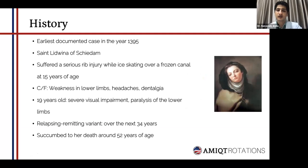Regarding the history, the earliest documented case was in the year 1395. As seen here, the picture indicates St. Ludwina Skidem, who was the first case, seen in 1395, when she suffered a serious rib injury while ice skating over a frozen canal around 15 years of age. Clinical features at that point of time included weakness in the lower limbs, intermittent headaches, as well as dentalgia, which is nothing but tooth pain. Four years later at 19 years of age, severe bilateral visual impairment was noted as well as paralysis of the lower limbs. Over the next 34 years, the features progressed and relapsed, giving her the diagnosis of a relapsing remitting variant of multiple sclerosis. Around 52 years of age, the features worsened and unfortunately she succumbed to death.